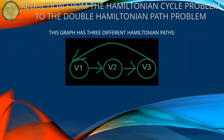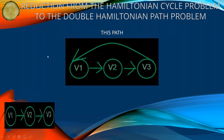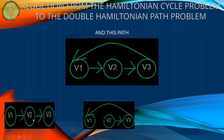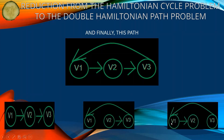For example, this graph has three different Hamiltonian paths and it also has the Hamiltonian cycle, as we saw previously. This path starts from v2 and ends in v1, and finally this path starts in v3 and ends in v1.